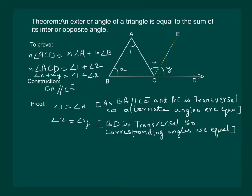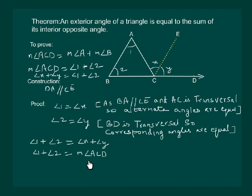Now let us add the two equations. The left-hand side becomes angle 1 plus angle 2, equal to angle X plus angle Y. But we know that angle X plus angle Y is equal to angle ACD. Hence we have proved that the exterior angle of a triangle is equal to the sum of its interior opposite angles.